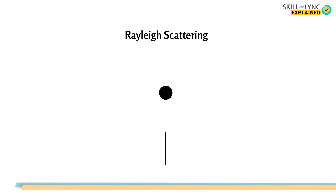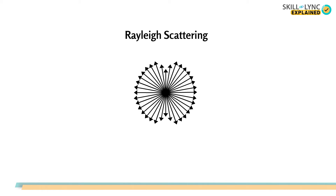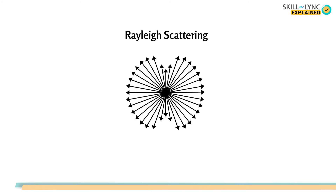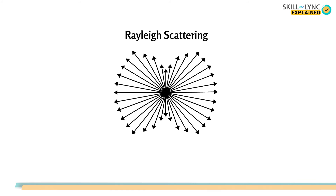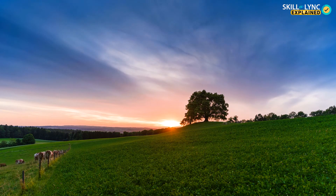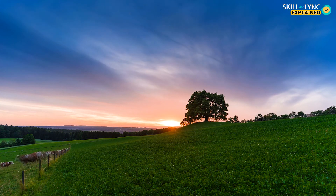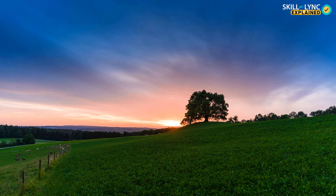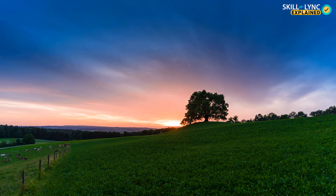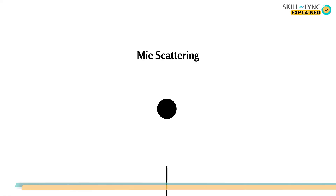Linear scattering has two major divisions: Rayleigh scattering and Mie scattering. In Rayleigh scattering, the atoms inside the fiber absorb the light and then scatter it in a different direction. Although this appears like absorption loss, here the light is scattered back, and this makes it different from absorption loss. As a fun fact, the scattering of blue light in the atmosphere is also caused by Rayleigh scattering.